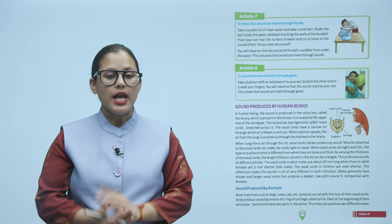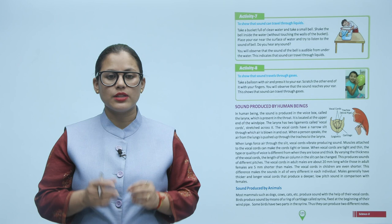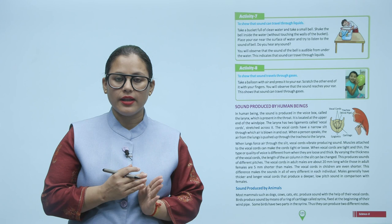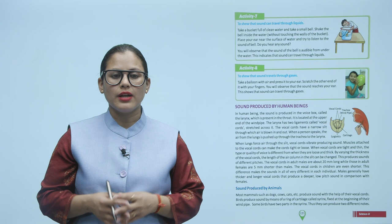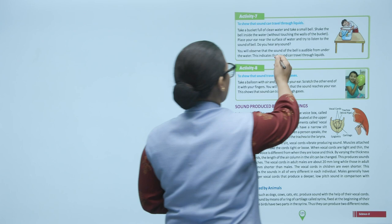Activity 7: To show that sound can travel through liquids. Take a bucket full of clean water and a small bell. Shake the bell inside the water without touching the walls of the bucket. Place your ear near the surface of the water and try to listen to the sound of the bell. You will observe that the sound of the bell is audible from under the water. This indicates that sound can travel through liquids.